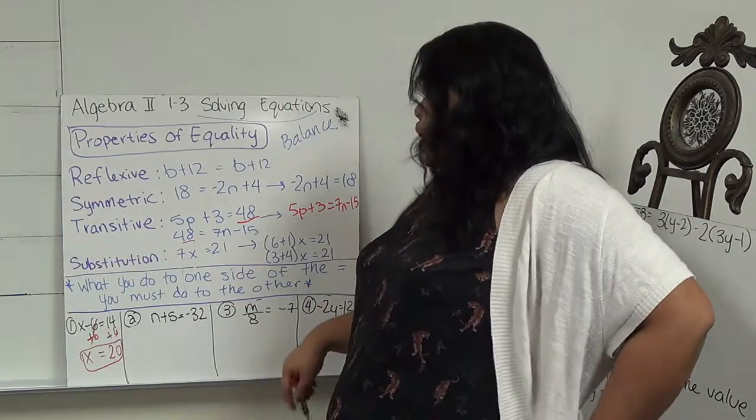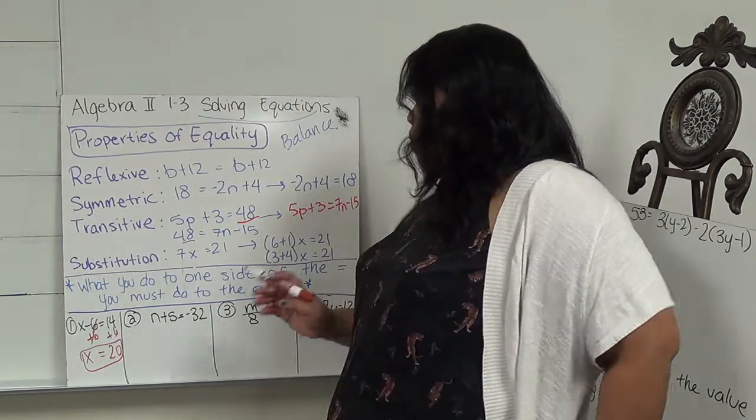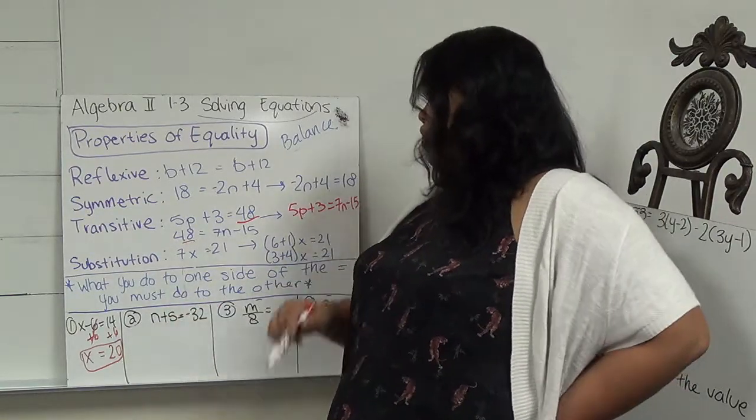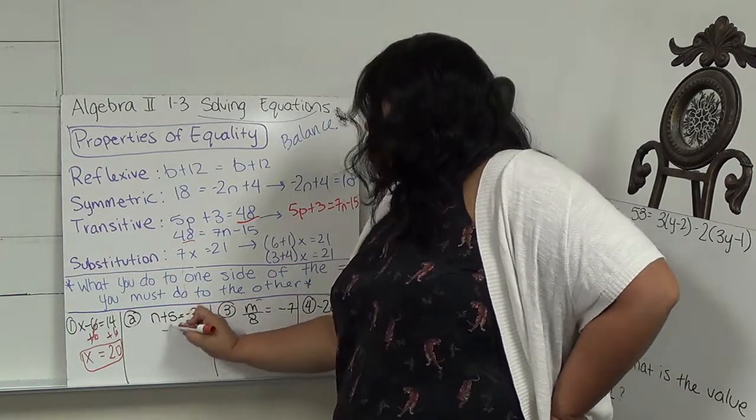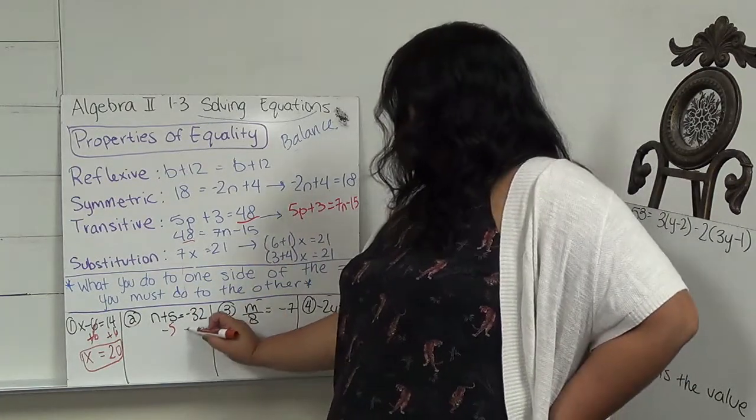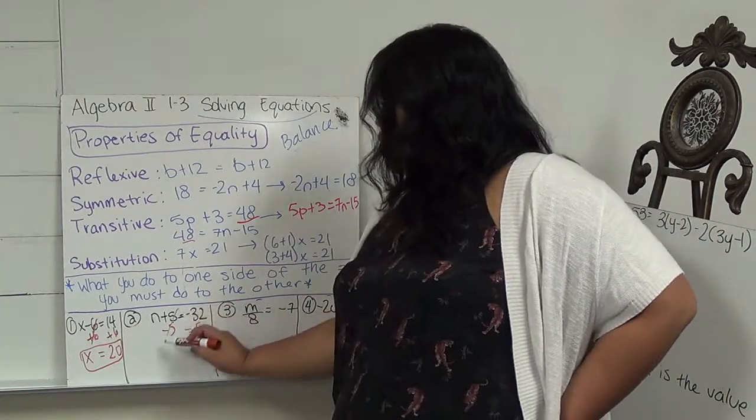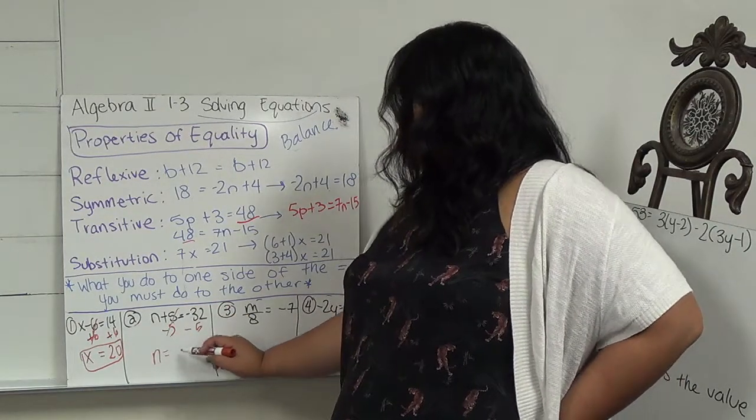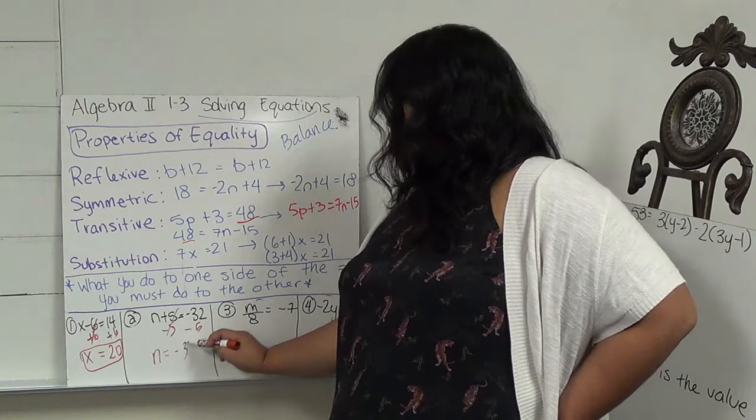Number 2 is n plus 5. So the friend of n is plus 5. The opposite of a plus 5 is a minus 5. And my golden rule is what I do to one side, I have to do to the other. So negative 5. This cancels out, leaving me with just n. And negative 32 minus 5 is negative 37.